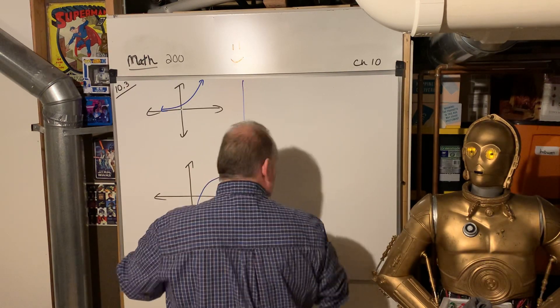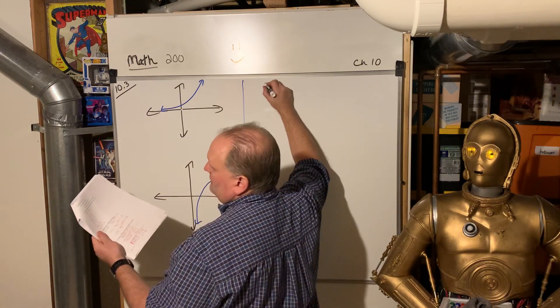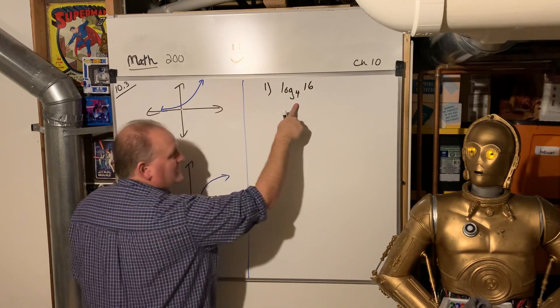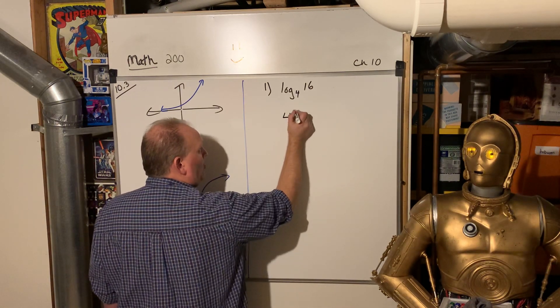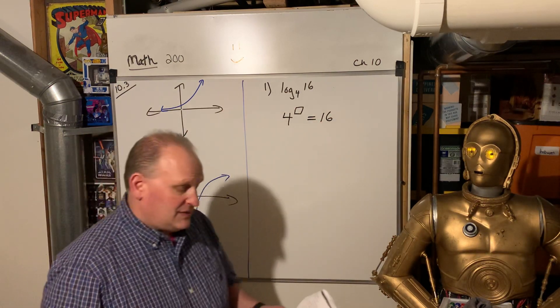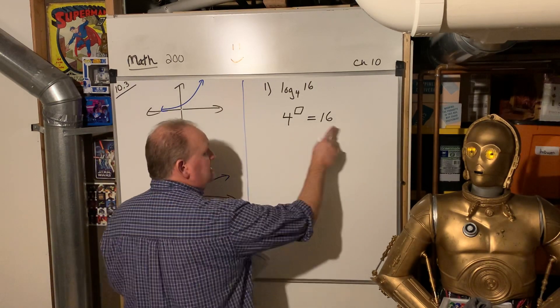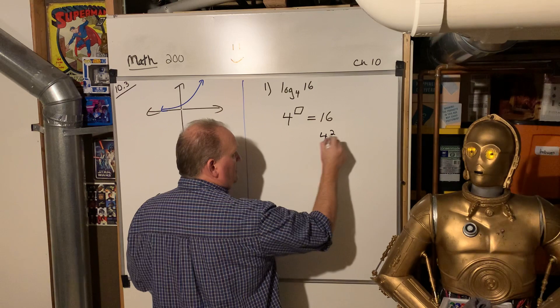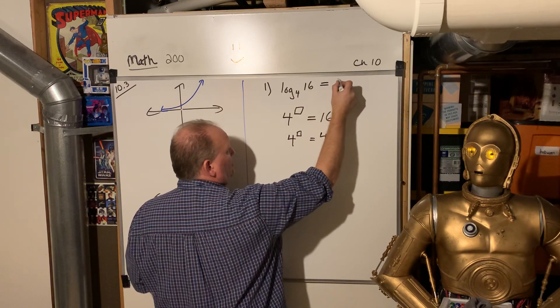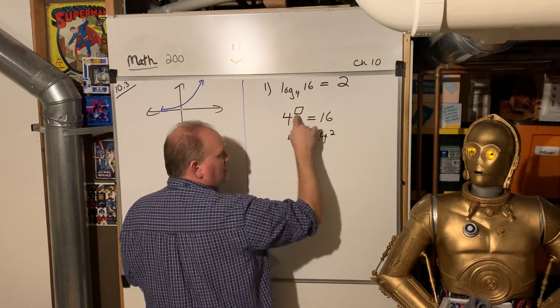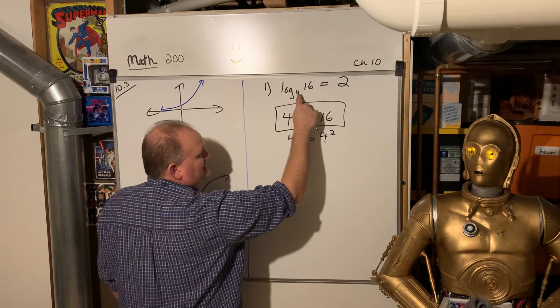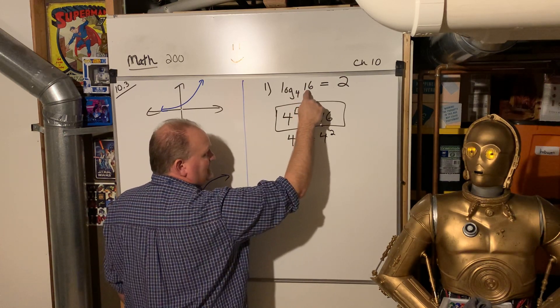Logs are really just a fancy way of writing exponents. So log base four of 16, really all of this is, is a fancy way of saying four to what power gives you 16. That's what's being questioned here. And so that's pretty easy, right? We did that already for, and then this would be four squared, and that would be four to what power? So two. So log base four of 16, that equals two. What the log is, is a fancy way of writing the exponent. That's all it is.